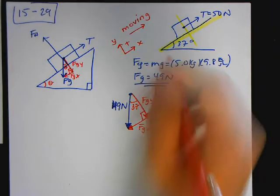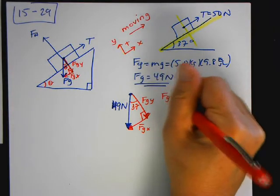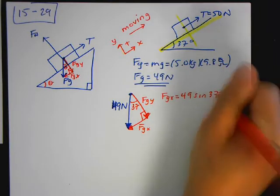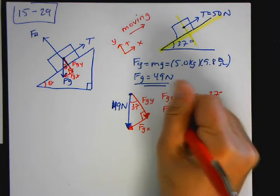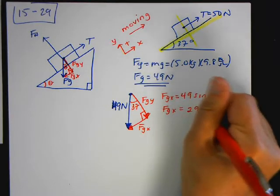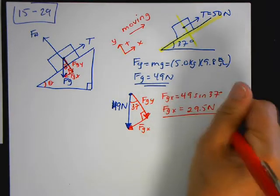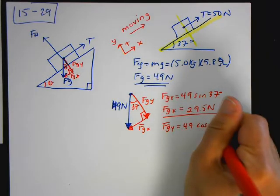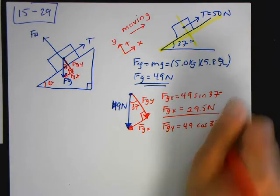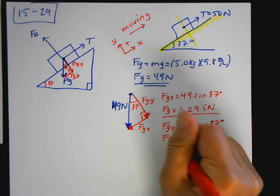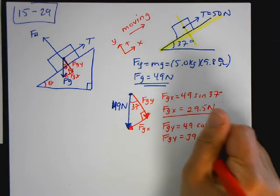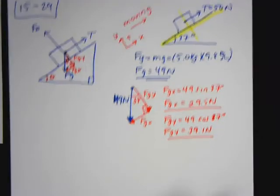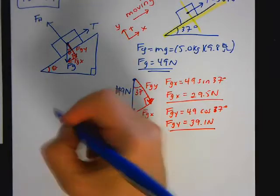Okay. So FGX is equal to 49 sine of 37 degrees. So FGX is equal to 29.5 newtons. FGY is equal to 49 cosine of 37 degrees. So FGY is equal to 39.1 newtons.